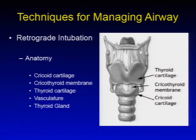Next, retrograde intubation. This technique involves the anatomy of the area including, from the bottom: the cricoid cartilage just above the tracheal rings, above that the cricothyroid membrane, above that the thyroid cartilage, and also some vasculature and the thyroid gland in that area.